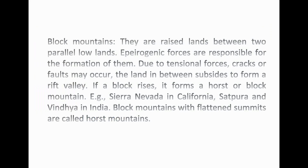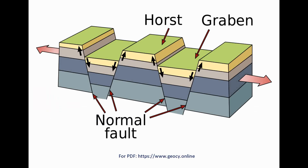Block mountains are raised lands between two parallel lowlands. Epeirogenic forces are responsible for their formation. Due to tensional forces, cracks or faults may occur, and the land in between subsides to form a rift valley. If a block rises, it forms a horst or block mountain. Examples include Sierra Nevada in California, and Satpura and Vindhya in India. Block mountains with flattened summits are called horst mountains.